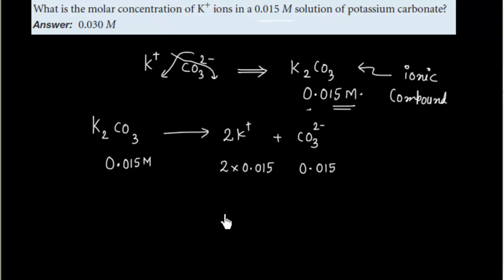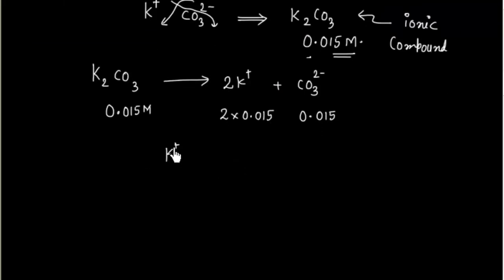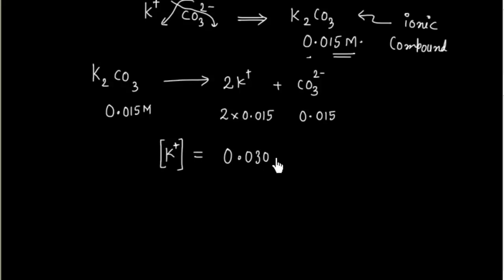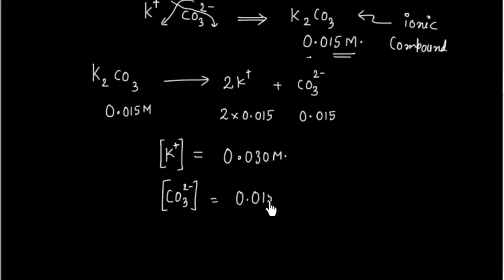Therefore, the concentration of K⁺ is 0.030 M. Similarly, the concentration of CO₃²⁻ is 0.015 M, which is the same as the original concentration of K₂CO₃.